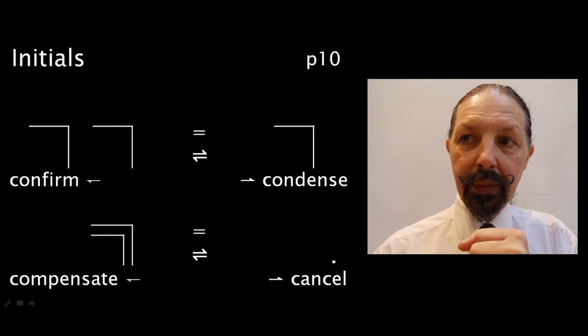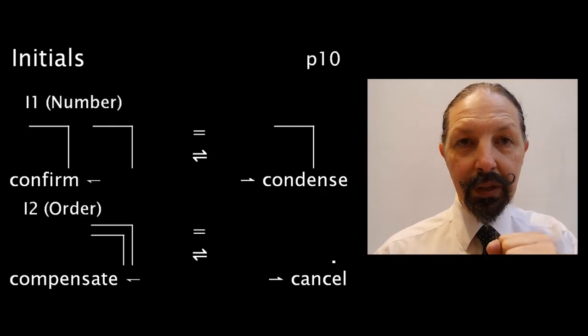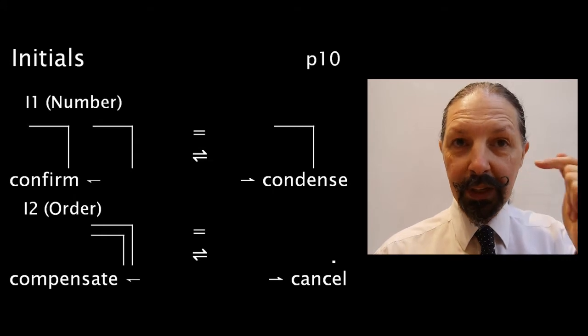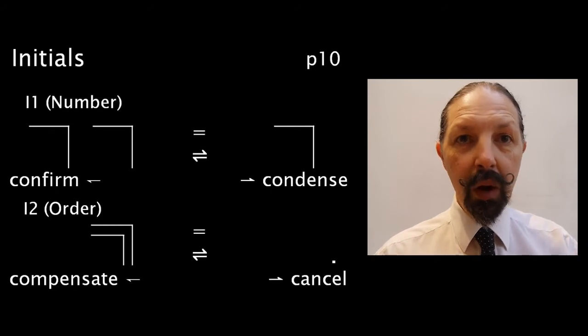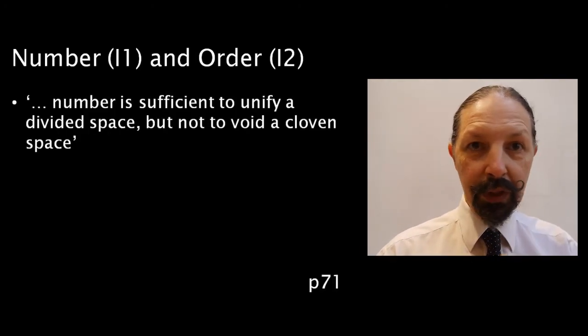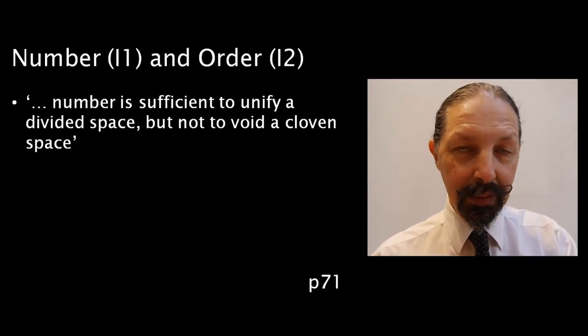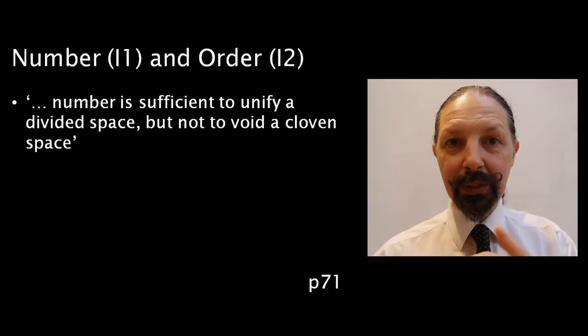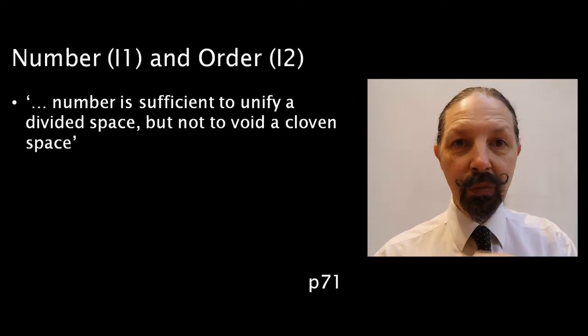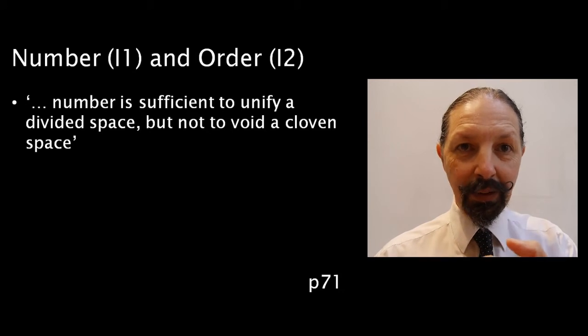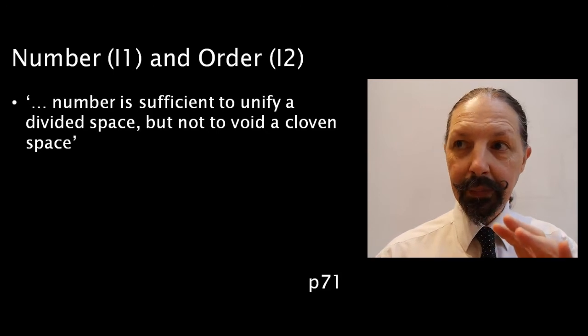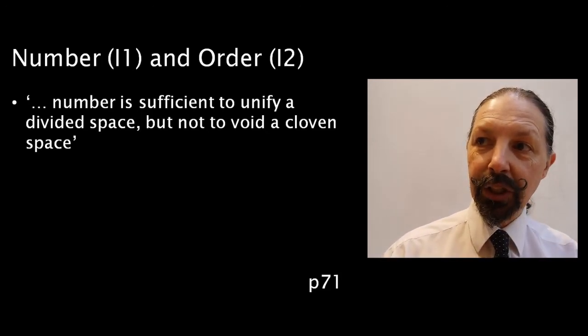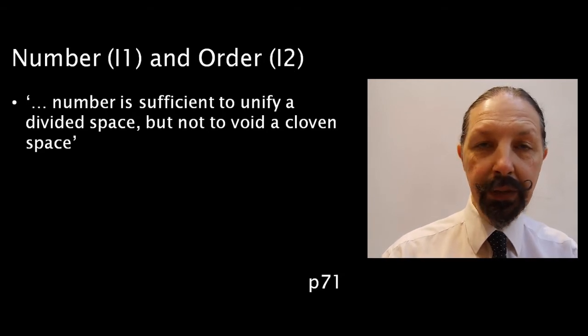So, from these initials, he says we're going to treat these in shorthand form and refer to them as I1 and I2. And I1, he calls number, and I2, he calls order. What does he mean by number and order? Well, in the notes to chapter 4, which are useful accompanying explanatory pieces of text for each chapter, each chapter has its own set of notes, and it's well worth going through these, because they explain a lot of the background detail, to what is essentially a very minimalistic, elegant, but also sparse text.